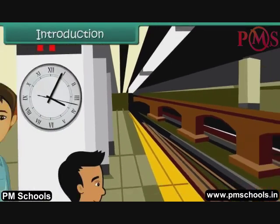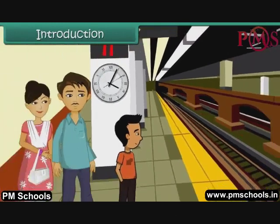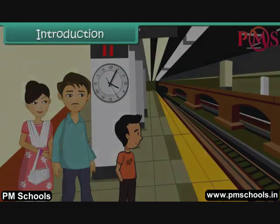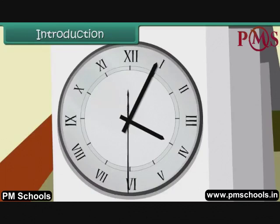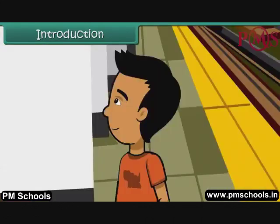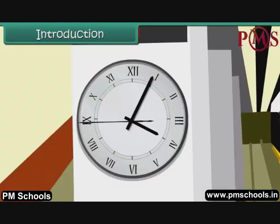Abhishek is at the railway station with his parents. They are going for summer holidays to Mathura. Their tickets are reserved on the 4:30 train. Abhishek is looking at the huge railway clock and wants to find out when the train would start, but he is unable to read the clock as all the numbers are written using Roman numerals.